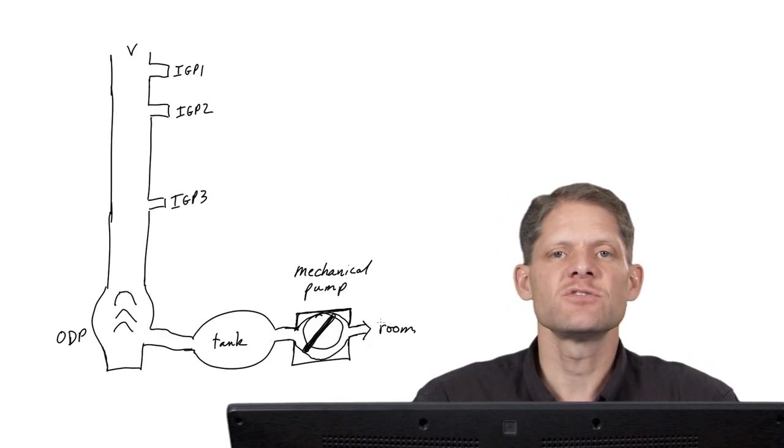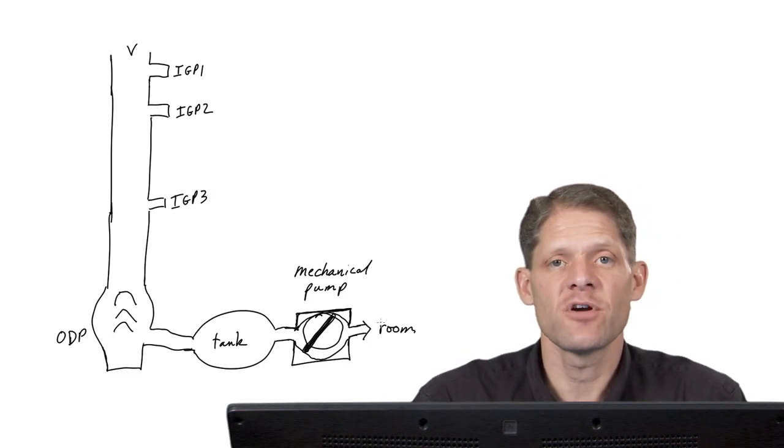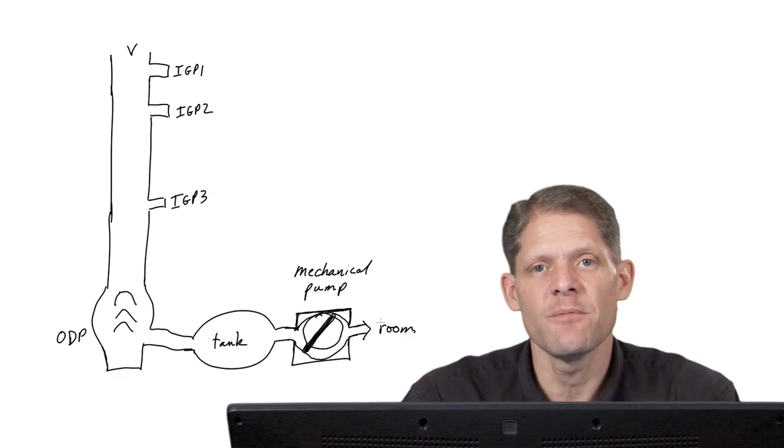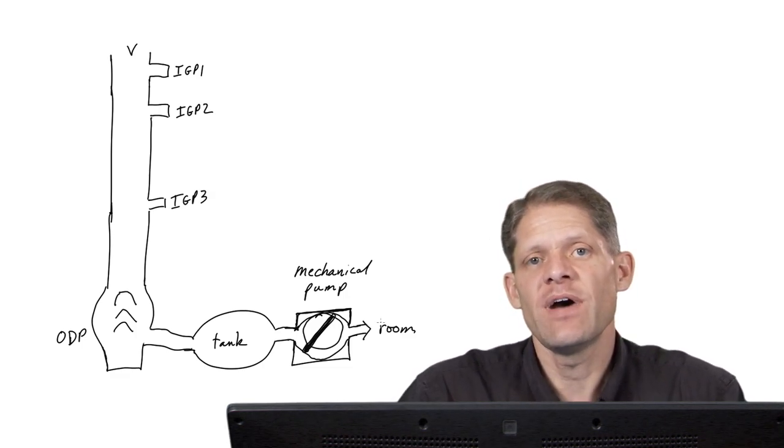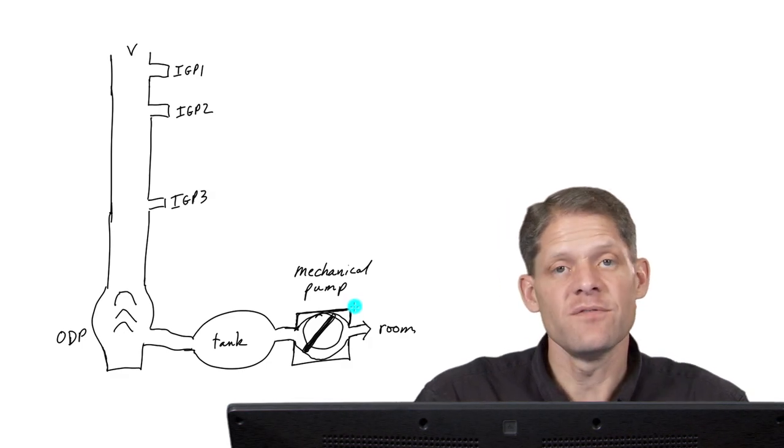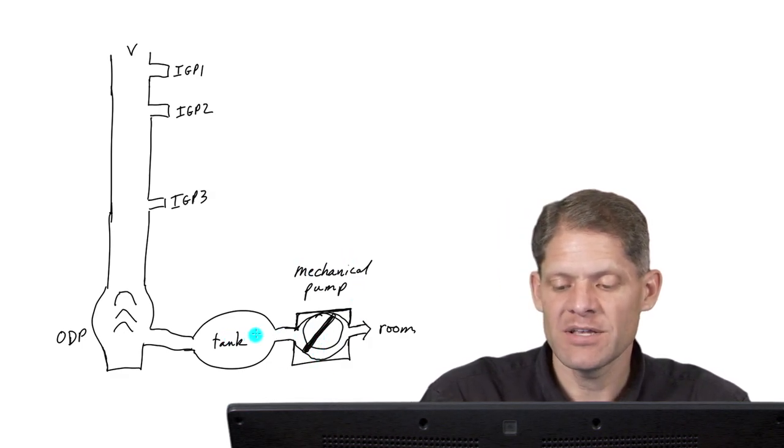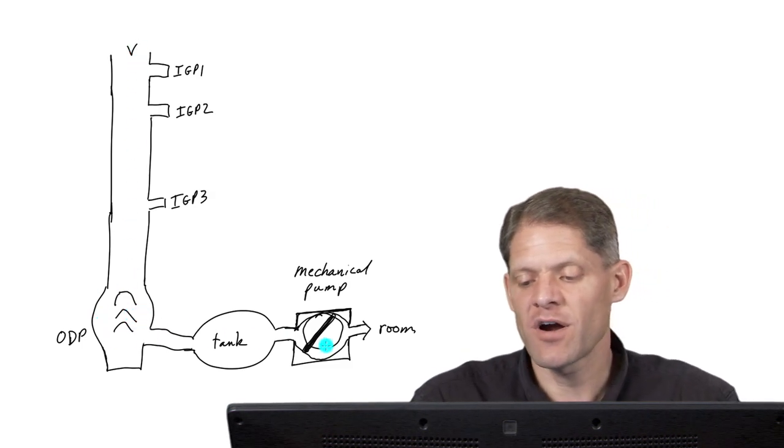When a microscope is vented, first of all, all the pumps are shut off and then valves are opened to allow atmospheric pressure to vent into the column. Once it's time to evacuate the column, the valves are sealed, obviously, and then first the mechanical pump is started, and it evacuates the tank, the oil diffusion pump, and the column as far as it can go.